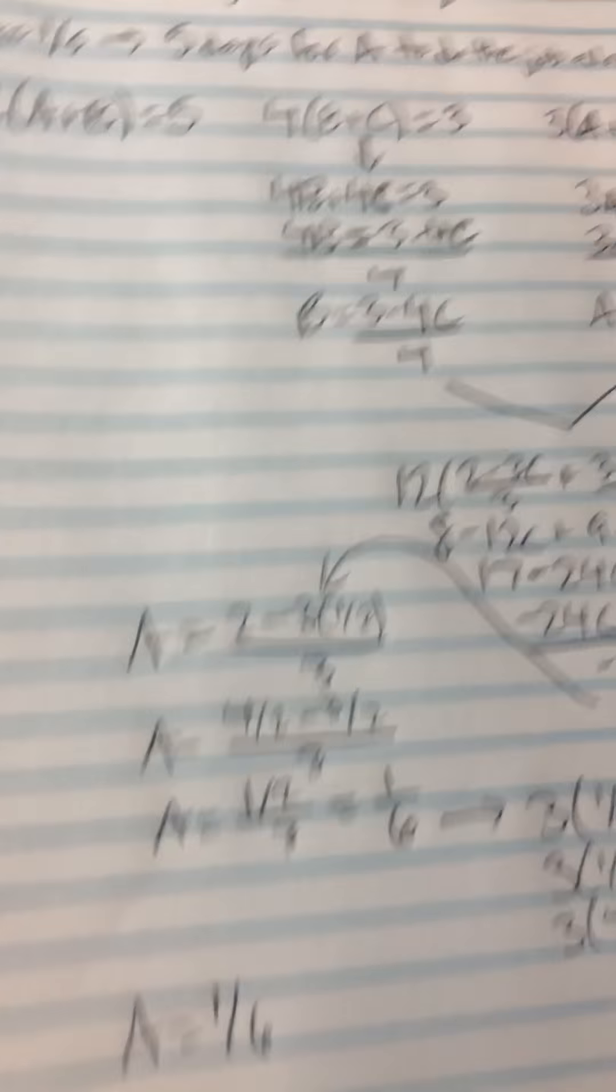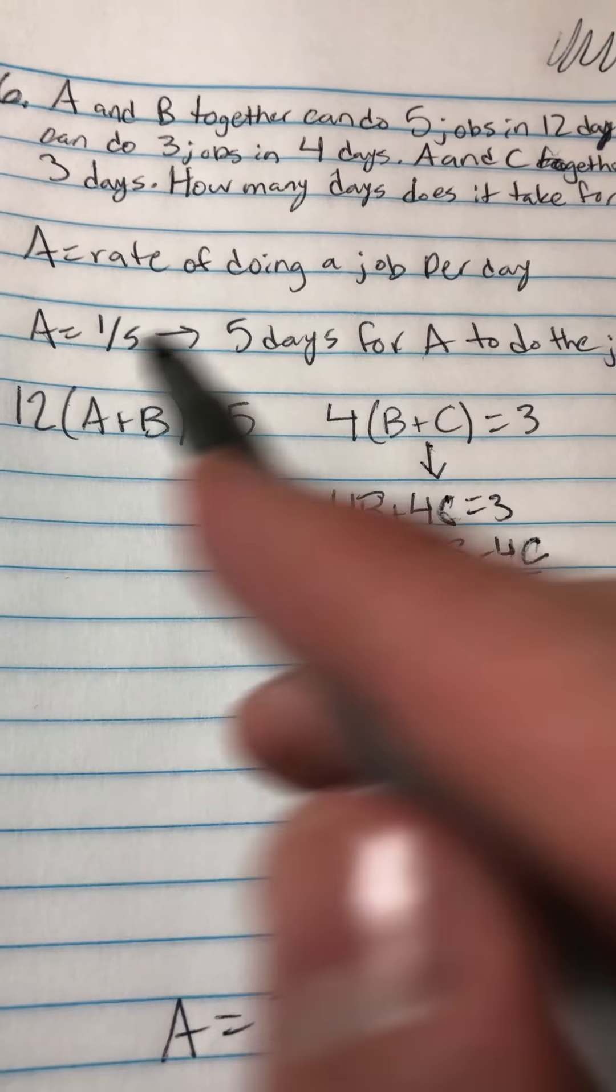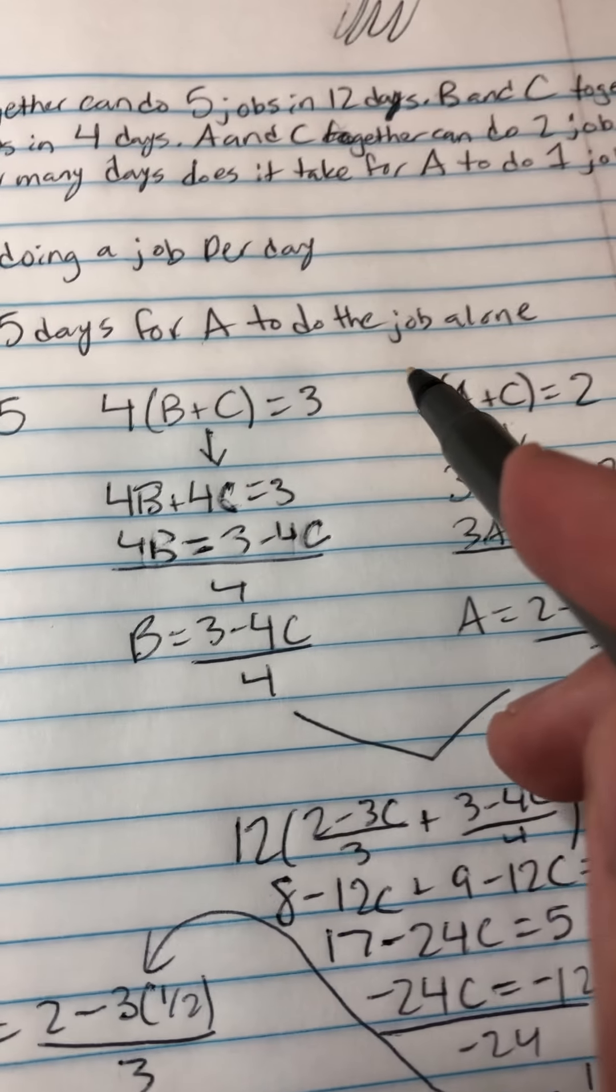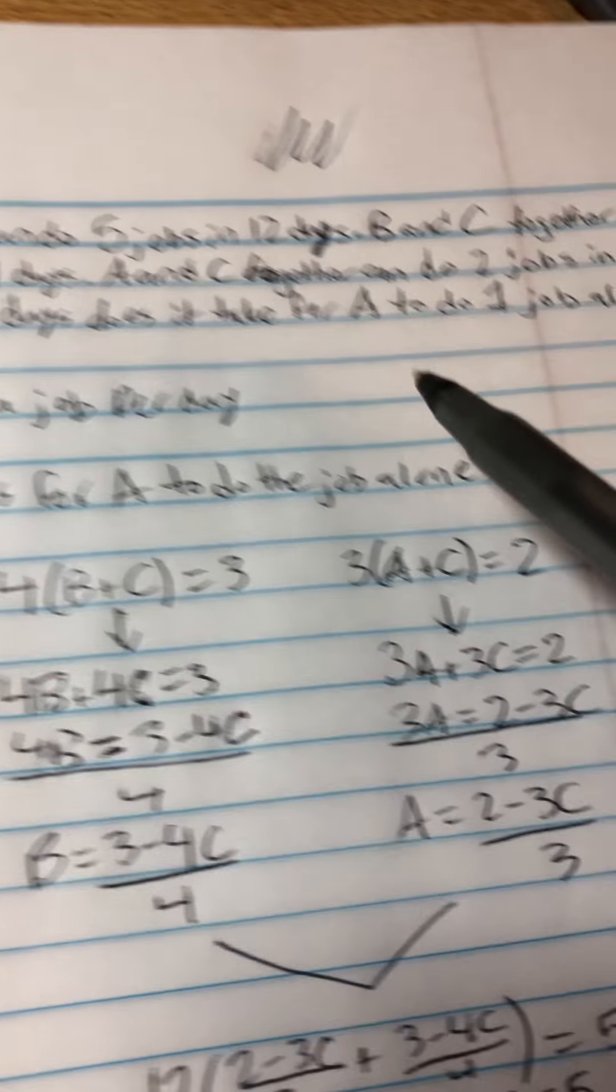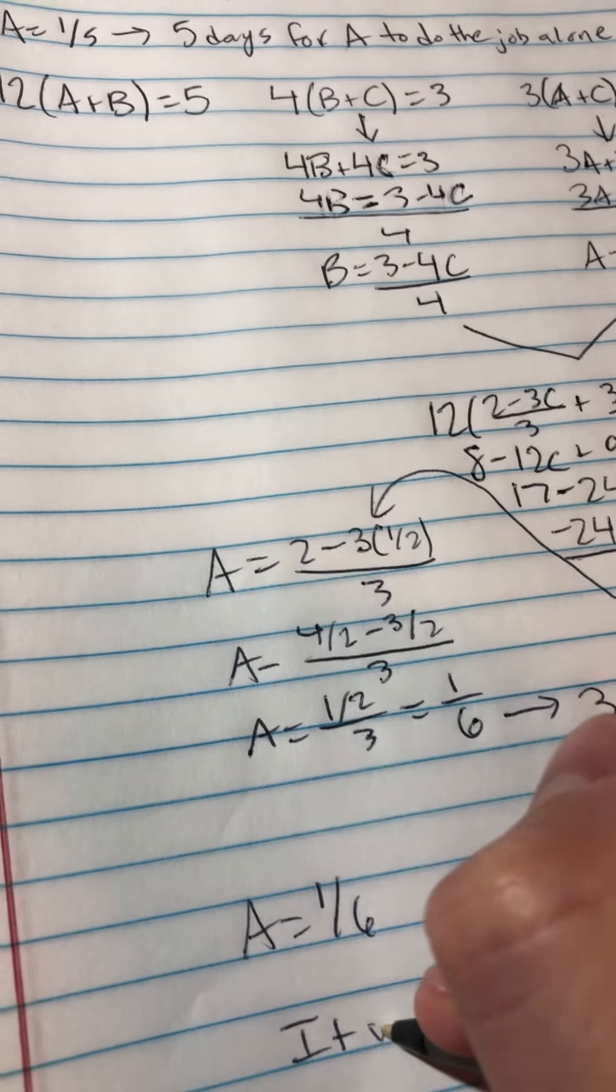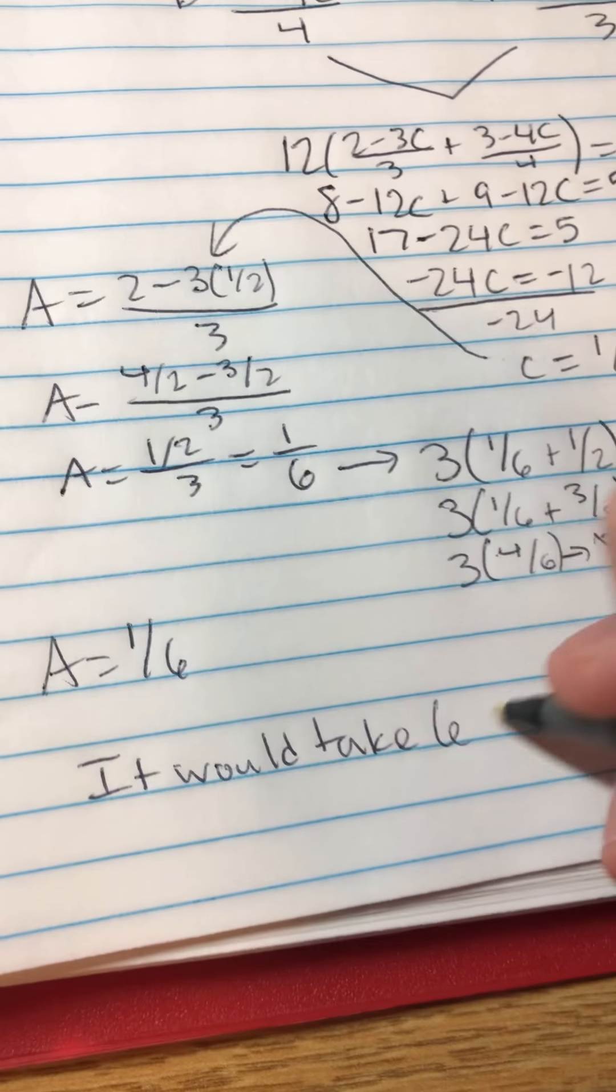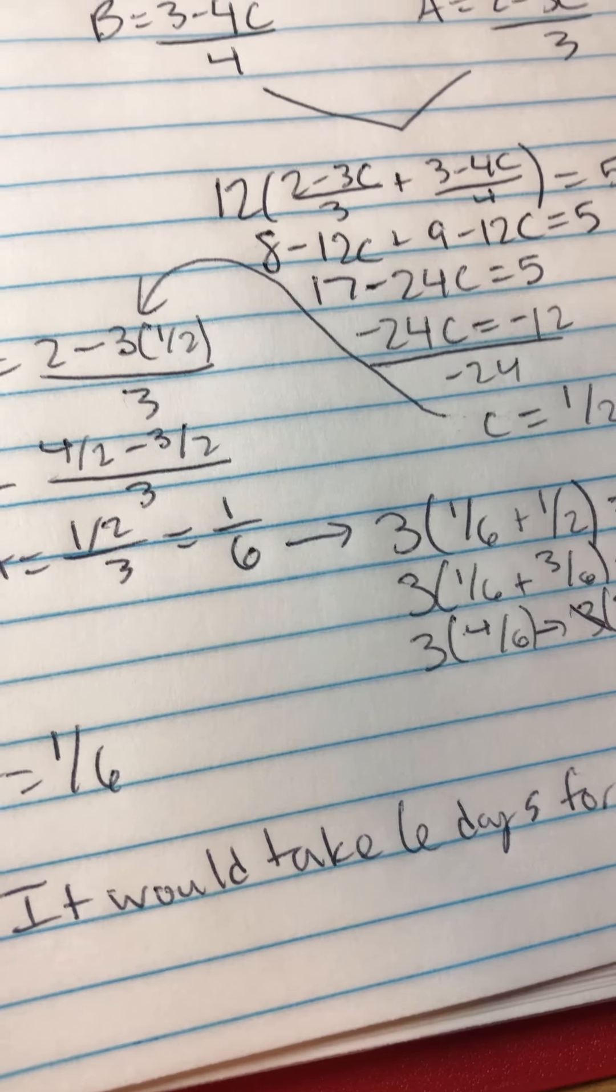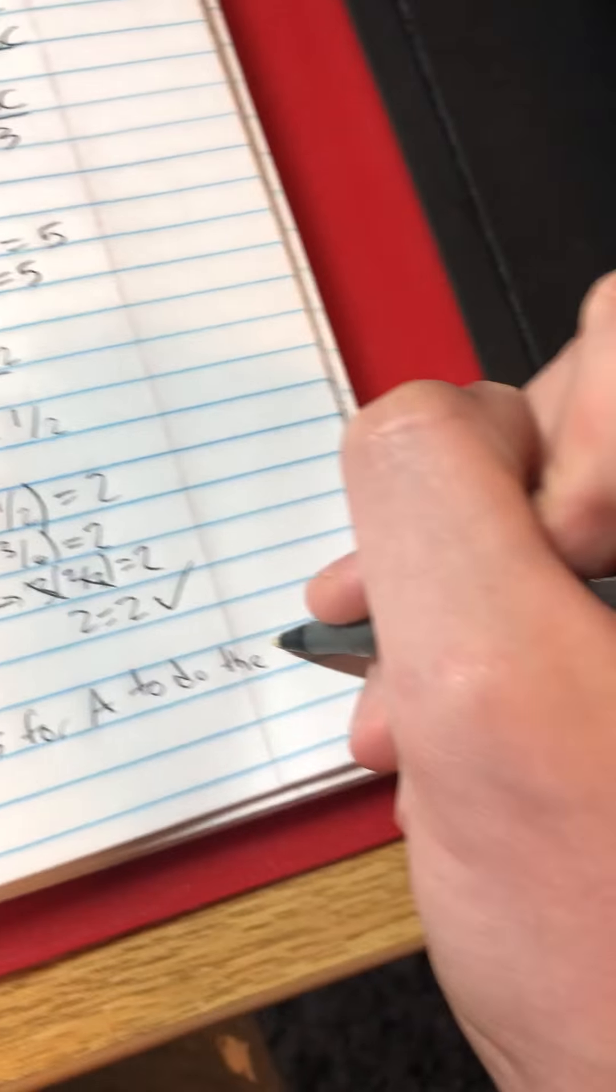So A officially equals 1/6. And so remember how we made A the rate of doing a job per day? So if A equals 1/5, that means it would take 5 days for A to do the job alone. And the question is asking, how many days does it take for A to do 1 job alone? So since A equals 1/6, it would take 6 days for A to do the job.